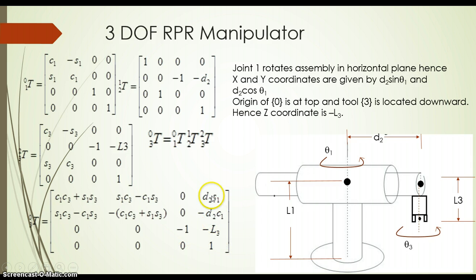Now these are the position parts of 0T3. As joint 1 rotates the assembly in the horizontal plane, hence the x and y coordinates are given by d2 sin theta 1 and d2 cos theta 1. The origin of the base frame is taken at the top here, so tool 3, joint 3, is located downward, and the z-coordinate will be minus L3, which is the length of the tool.